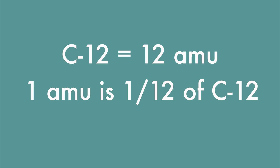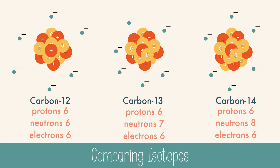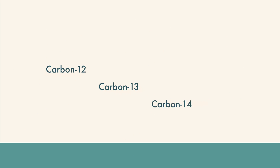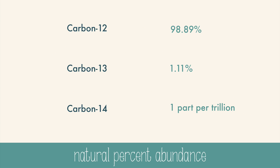Carbon-12 is just one isotope of carbon. Recall that elements with the same number of protons are the same element, but the number of neutrons can be different. Carbon-12, carbon-13, and carbon-14 all have different numbers of neutrons. These exist naturally in certain quantities. Carbon-12 makes up 98.89% of the naturally abundant carbon. Carbon-13 is 1.11%, and carbon-14 is so rare that there's only about one part per trillion in the atmosphere.